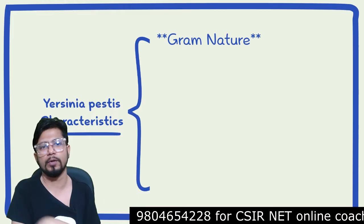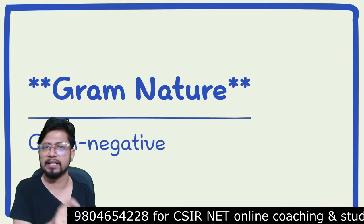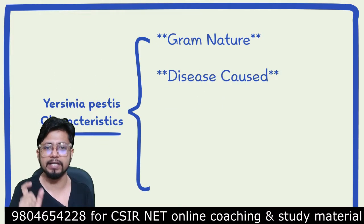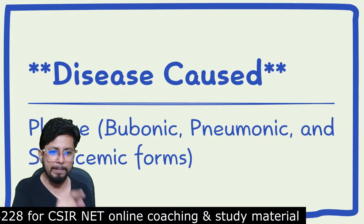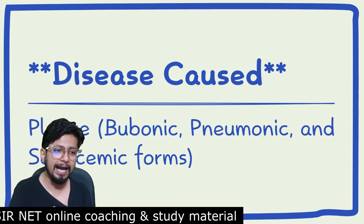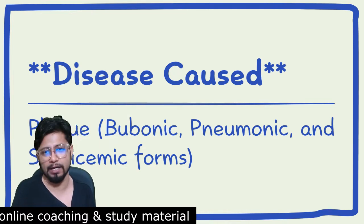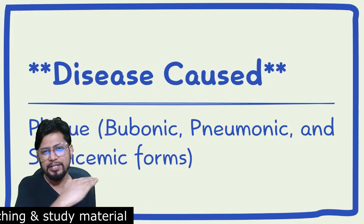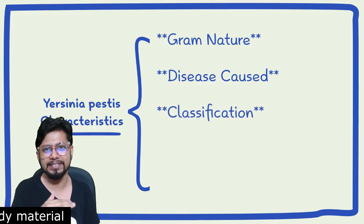The first thing we want to talk about is the gram nature of Yersinia pestis, which is gram negative. The disease Yersinia pestis causes is plague — bubonic plague, pneumonic plague, and septicemic forms. Yersinia pestis caused a huge decline in the human population earlier in our history.